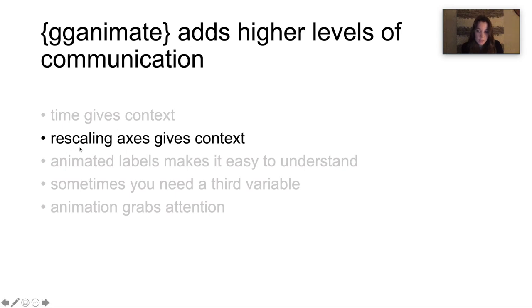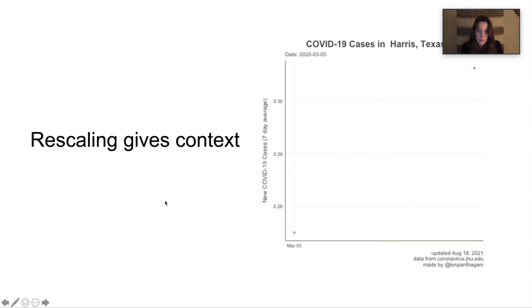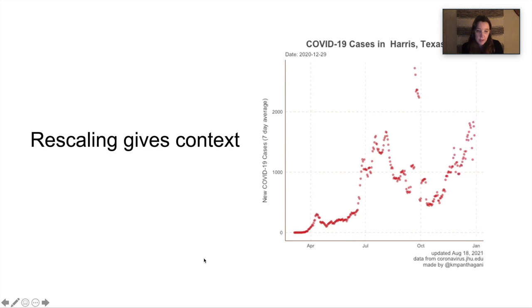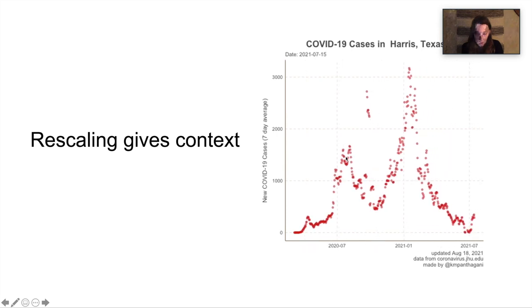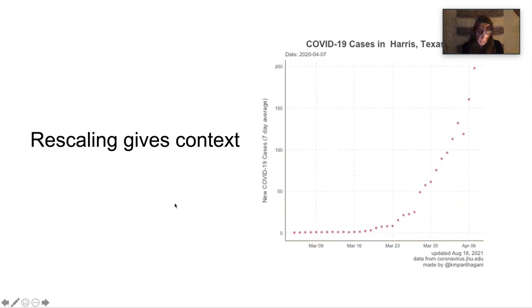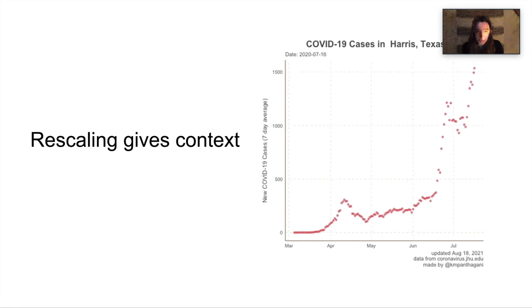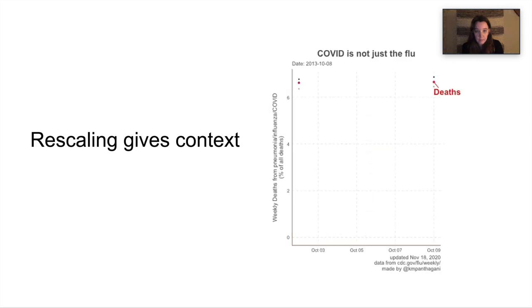So the next thing we can do is have the axes rescale as the plot is progressing. To do that, we just add this simple view_follow to our animation code. And now it looks like this. So you can see that the y-axis and the x-axis are rescaling every single time a data point is added to the plot. And this helps even more drive home things like exponential growth because you see not only the point shooting up, but you see the axis is having to rapidly change to accommodate for the rapid change in COVID cases. So it's just a more dramatic visual of rapid change over time.